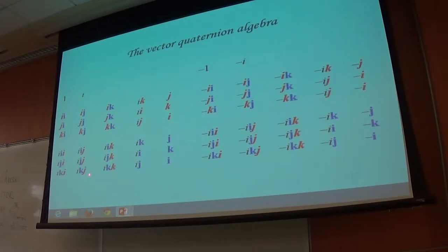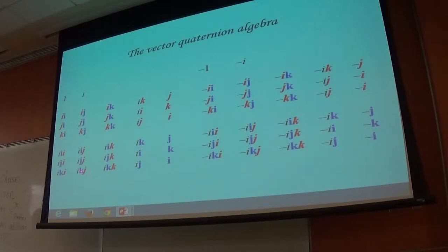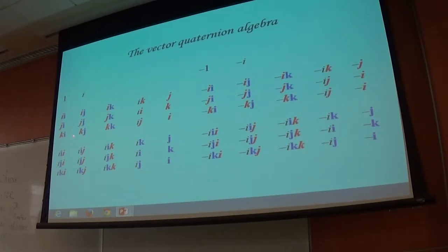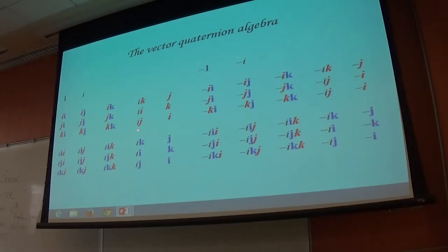Why I said one space was distorted: the red space here — I, J, K — that's connected to the same operator, so that's not distorted. But when you take the red ones, you can see they're connected to different operators. That's I, that's one, and these are I, J, and K. So the red space is distorted, and the blue one isn't, when you look at that.